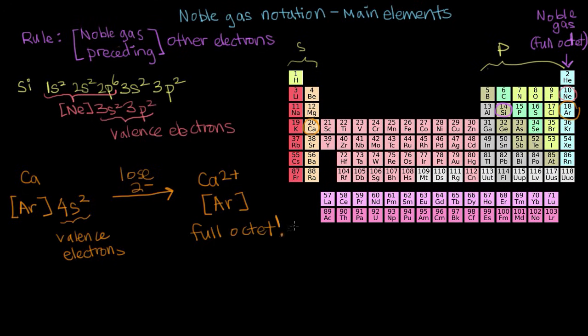So one of the many pros of writing things in noble gas notation, besides the fact that it makes your hand less tired, is that it makes it really easy to see where your valence electrons are, and whether or not your ion or atom has a full octet.